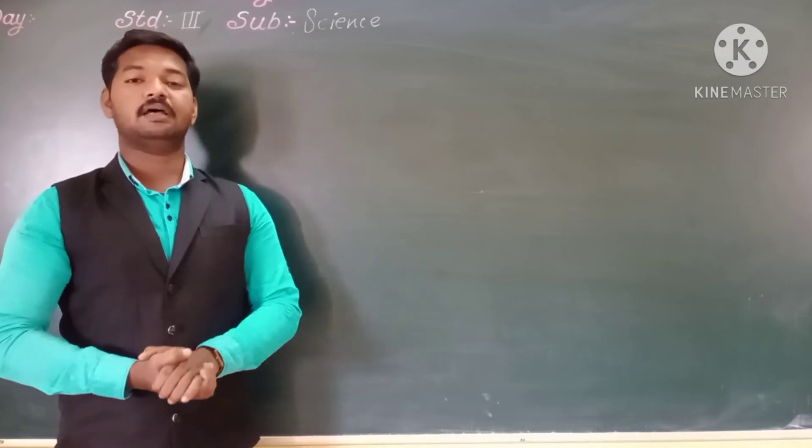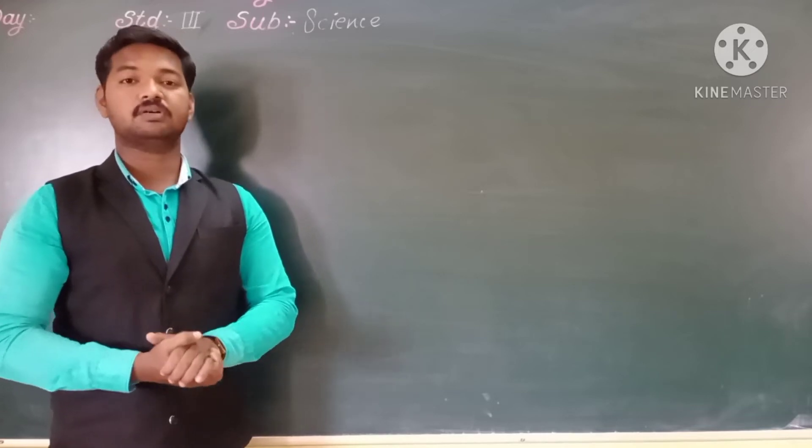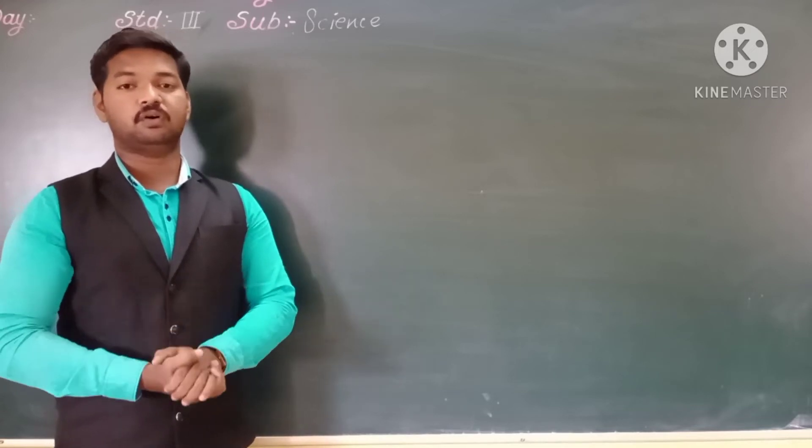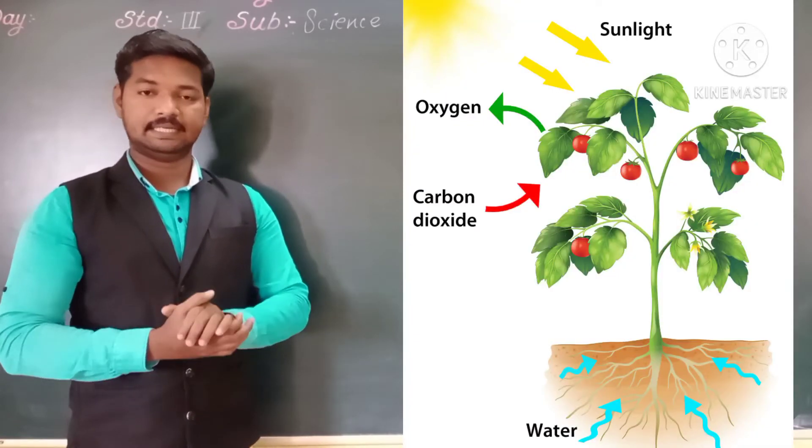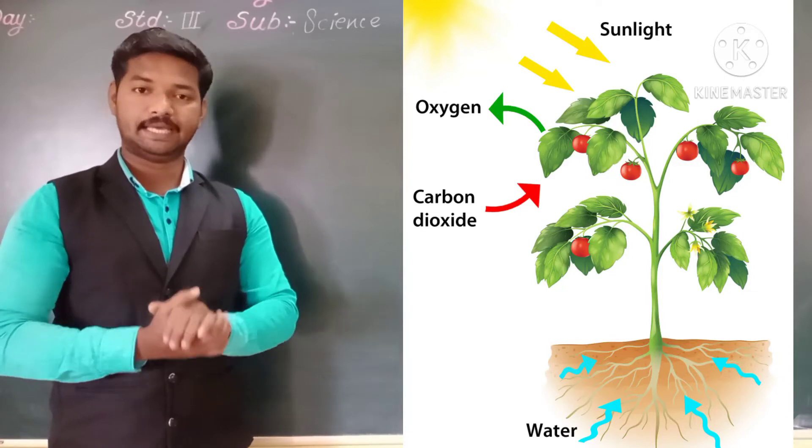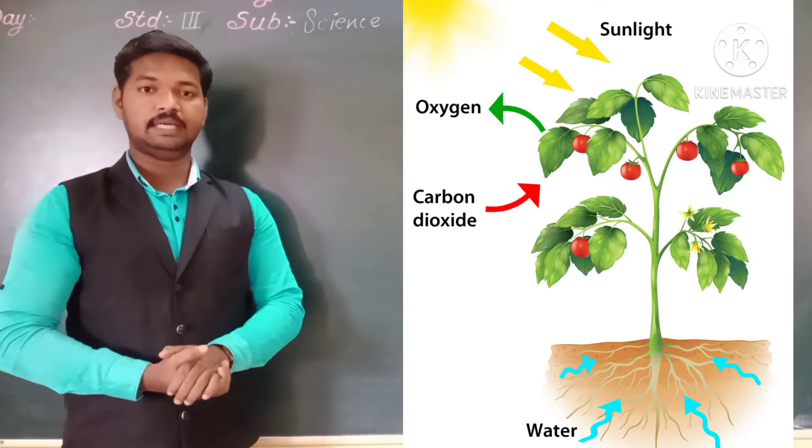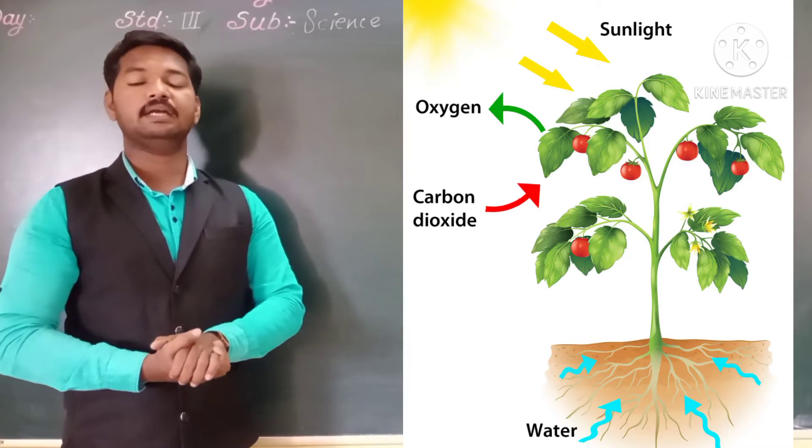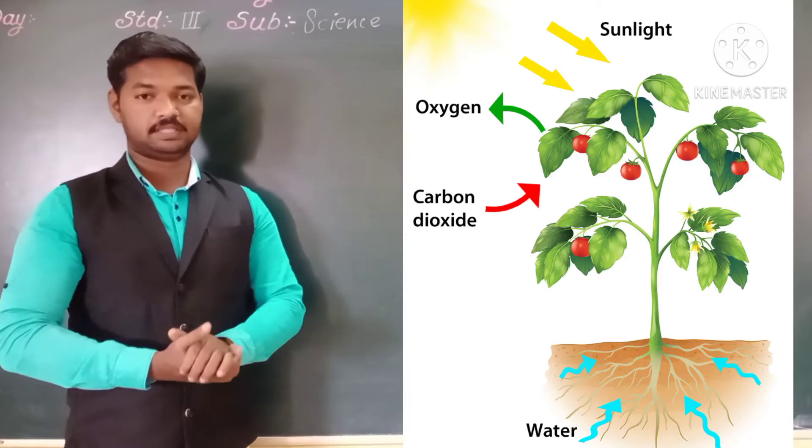Now we will see what is the work of leaves. Leaves are known as food factories of a plant. Why? Because they make food for the plant. The process by which green leaves make food for the plant with the help of carbon dioxide and water in presence of chlorophyll and sunlight is known as photosynthesis.